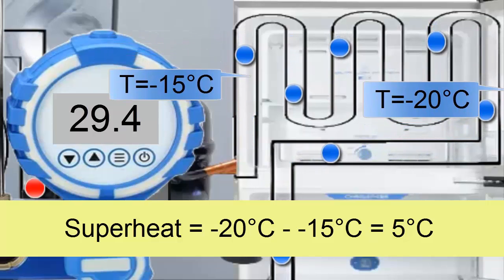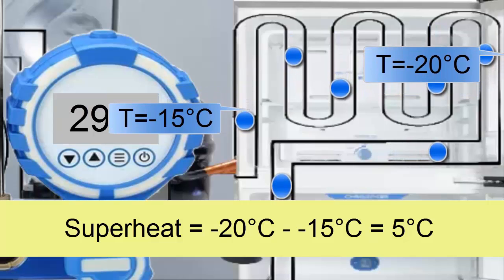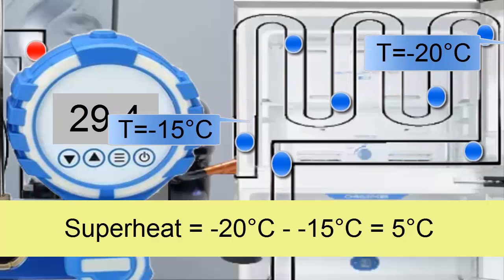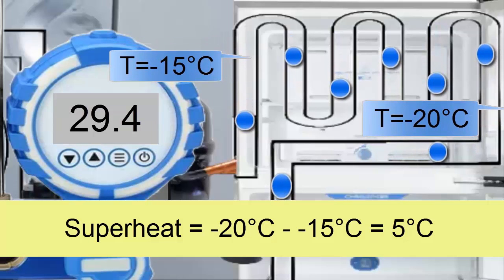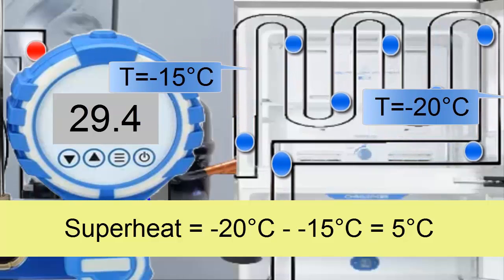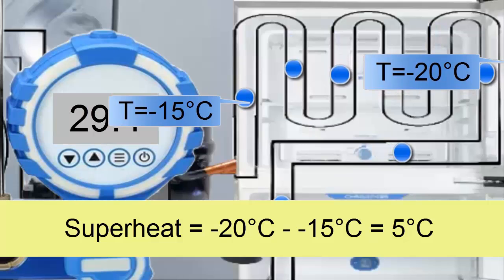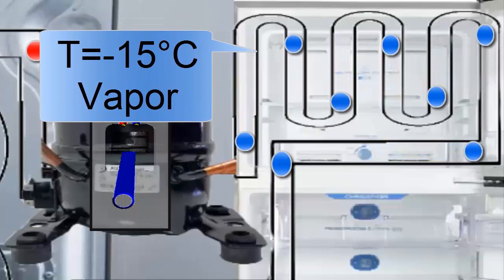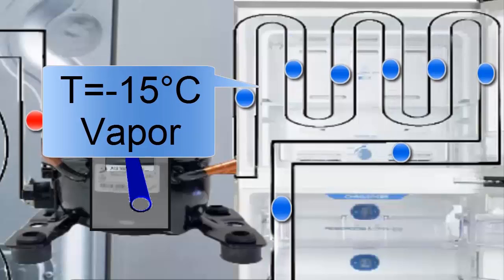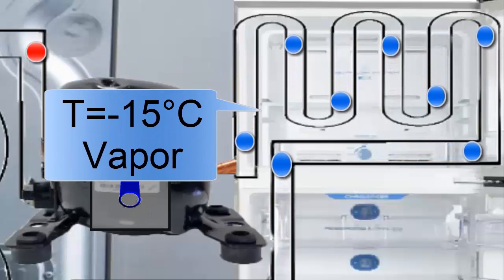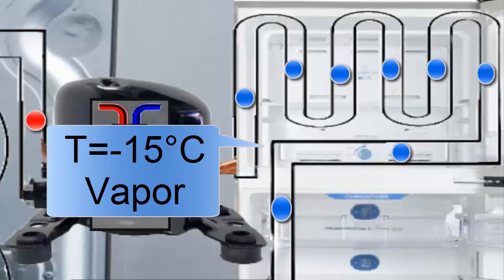Although the temperature has a slight change, we can approximate and say that the pressure of the R404A at the evaporator outlet is practically the same, still 29.4 pounds per square inch. The R404A, now in a vapor state, heads to the compressor through the suction pipe, which we can identify as the thickest pipe of the compressor.